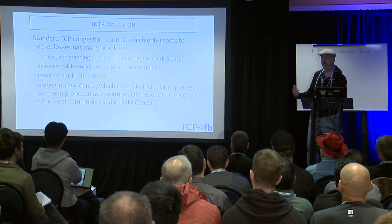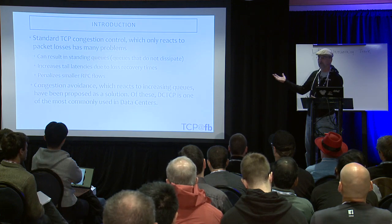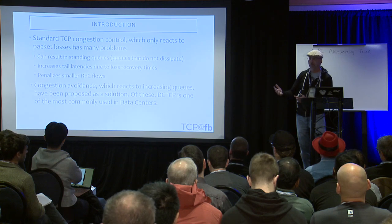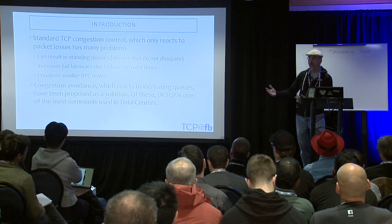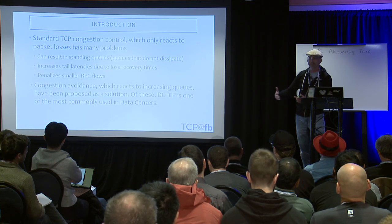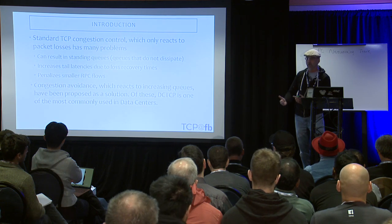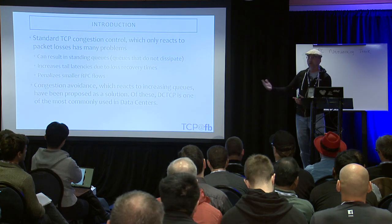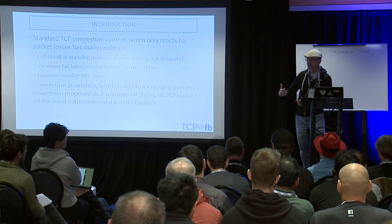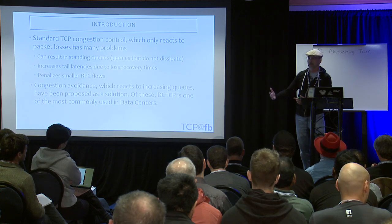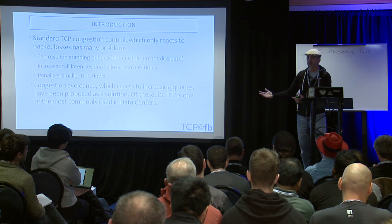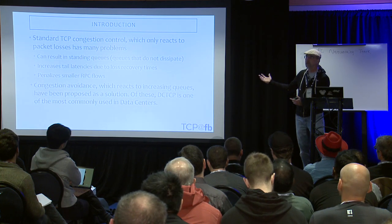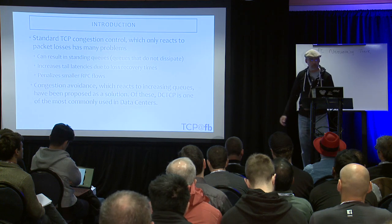Standard TCP also penalizes smaller flows because of these standing queues. If the RTT grows from tens of microseconds to one millisecond, a 10-kilobyte RPC can only go up to eight megabits per second — it doesn't matter how fast your link is. Whereas a one-megabyte RPC could achieve up to eight gigabits per second. So standard loss-based TCP typically results in penalizing smaller IPC flows.